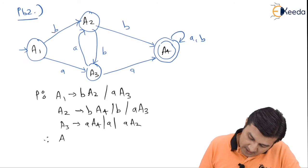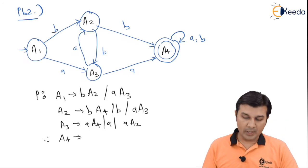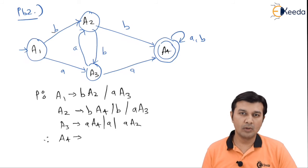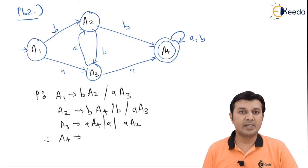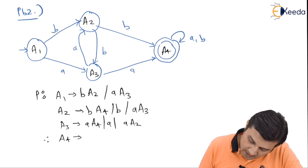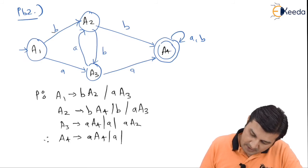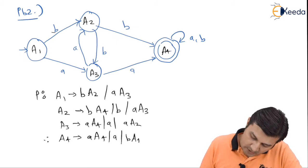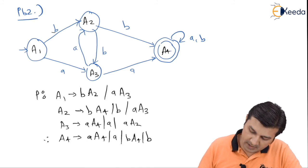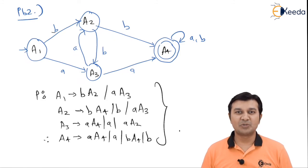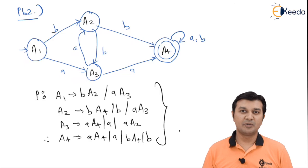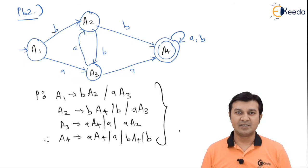The last productions are for A4. A4 on a goes to A4, and A4 on b goes to A4. Since A4 is the final state, it will have individual terminal productions. So A4 → aA4 and A4 → a, and A4 → bA4 and A4 → b. Those are the production rules — that is how simple it is. This is the procedure to convert a DFA to regular grammar. See you in the next session. Thank you.